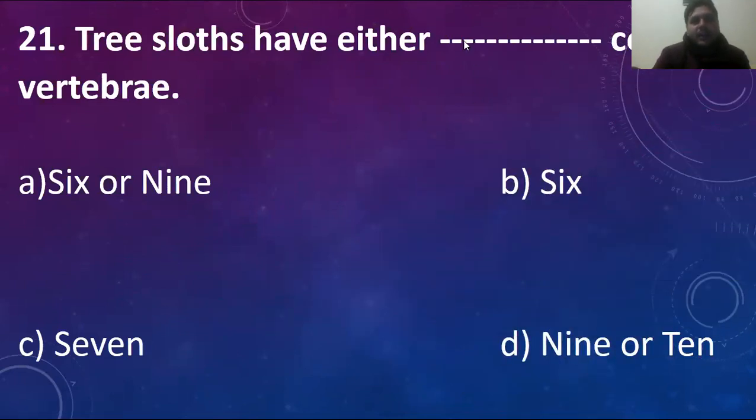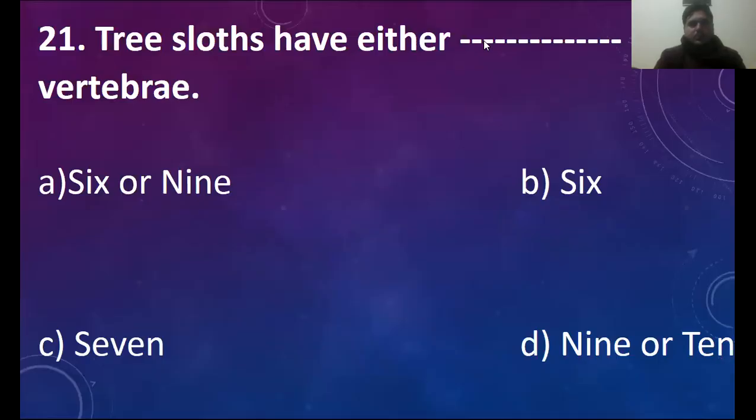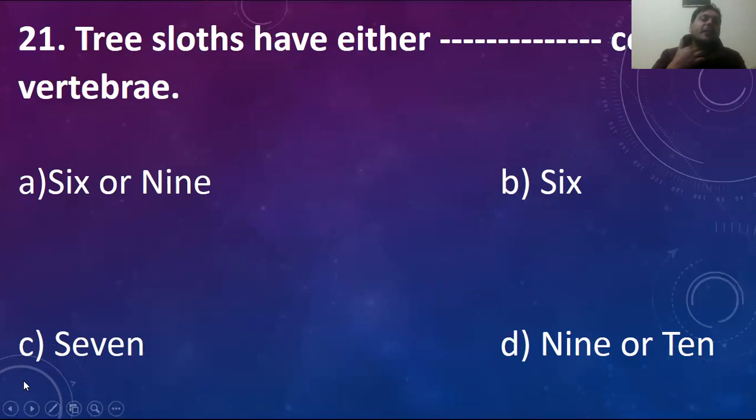Tree sloths have either blank cervical vertebrae. Either these are six or nine, seven, or ten. The right answer is six or nine. But in the case of giraffe, there are seven cervical vertebrae — that is the neck vertebrae. So the right answer for tree sloths is option A, six or nine.